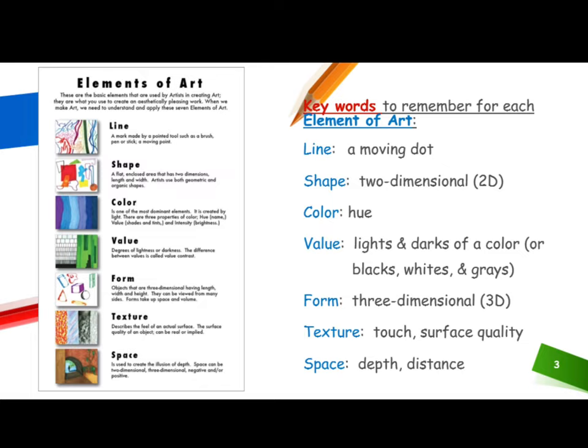Number five — form: objects that are three-dimensional, having length, width, and height. They can be viewed from many sides; forms take up space and volume. Number six — texture: describes the feel of an actual surface; the surface quality of an object can be real or implied. Number seven — space: used to create the illusion of depth; space can be two-dimensional, three-dimensional, negative, and/or positive.